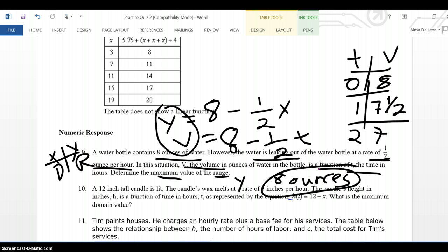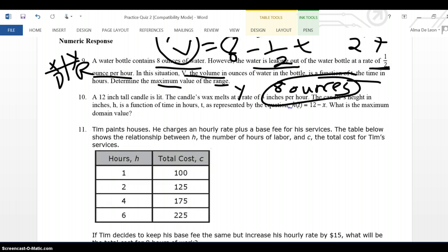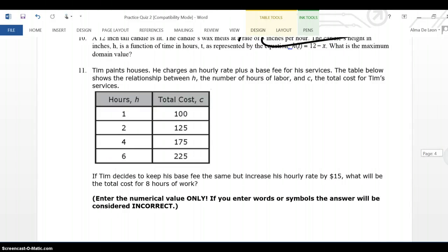So the highest or the biggest value for the range is actually 8 ounces. I'm not going to go over 12 because 12 is similar to 9. I'm going to go straight into 11.